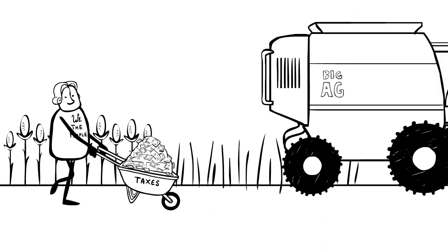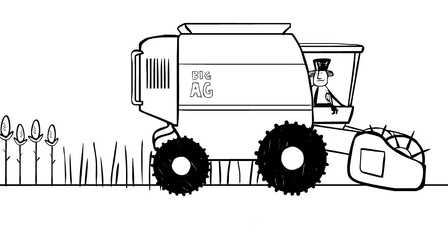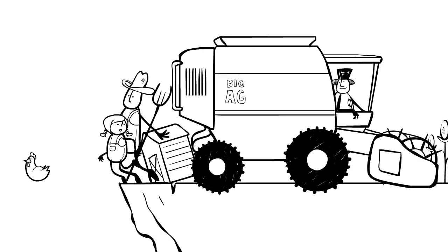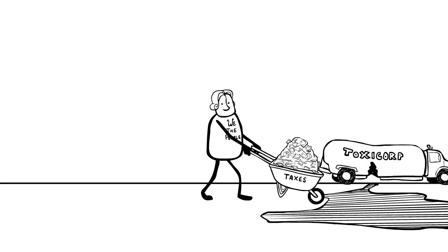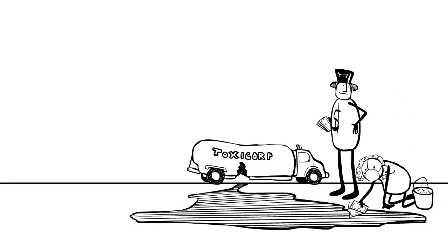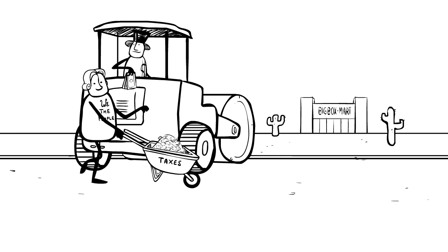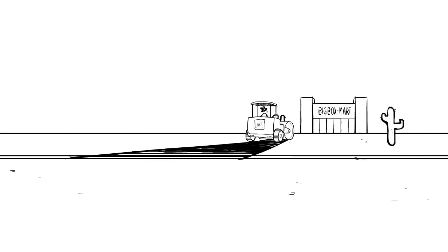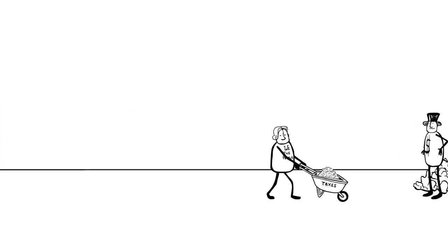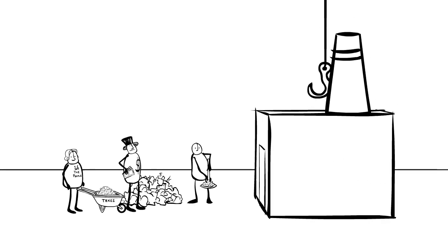There's spending subsidies, where the government just gives our money away, like payments that benefit big agribusiness while helping drive family farms off a cliff. Or the less obvious version, where the government foots the bill for things corporations should pay for themselves, like cleaning up toxic chemical spills or giant livestock manure ponds. Or building roads that only go to one place, like a new Wal-Mart. Or paying for polluting and wasteful garbage incinerators that would never make financial sense to build on their own.